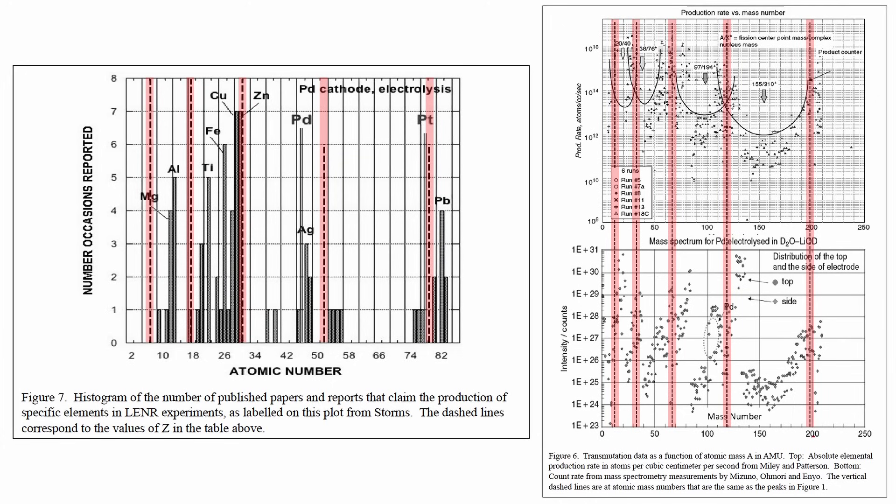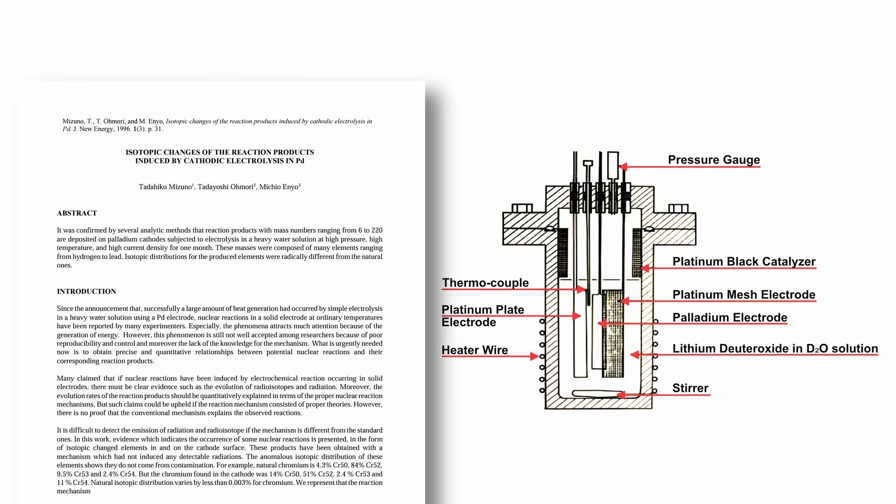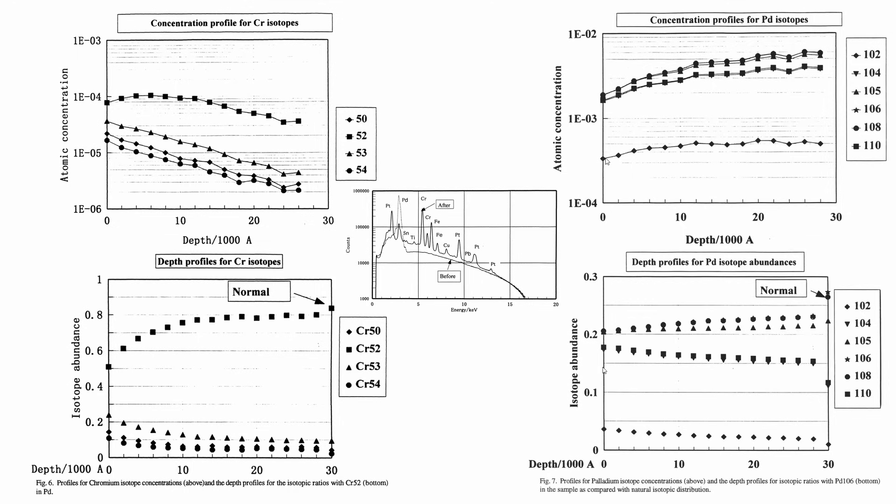The LENR transmutation experiments that revealed these peaks were conducted independently by multiple research groups, each employing distinct techniques and setups. Mizuno, Omori and Enyo performed closed electrolysis experiments on palladium rods immersed in heavy water under high pressure and temperatures. Their analysis, conducted using advanced spectroscopic methods like secondary ion mass spectrometry, consistently revealed changes in isotopic composition post-experiment.